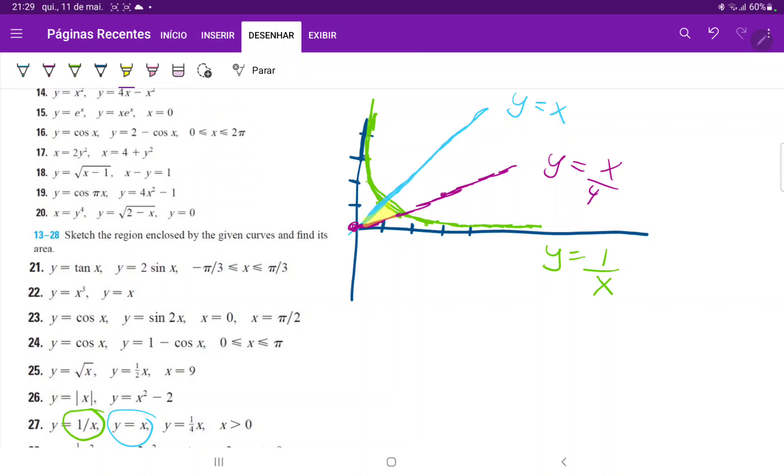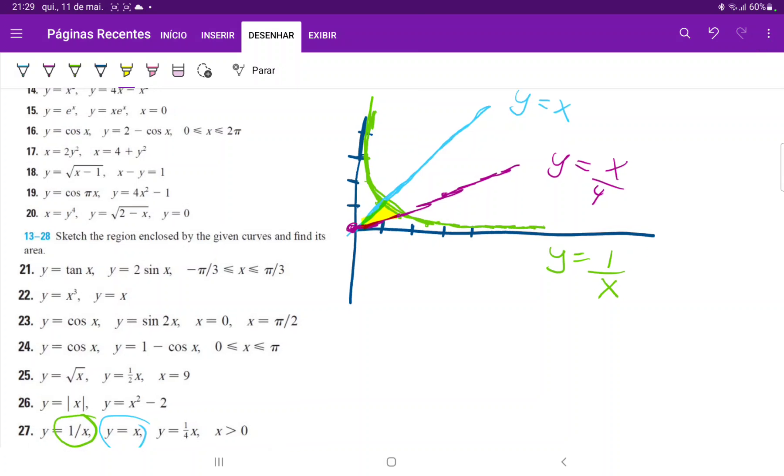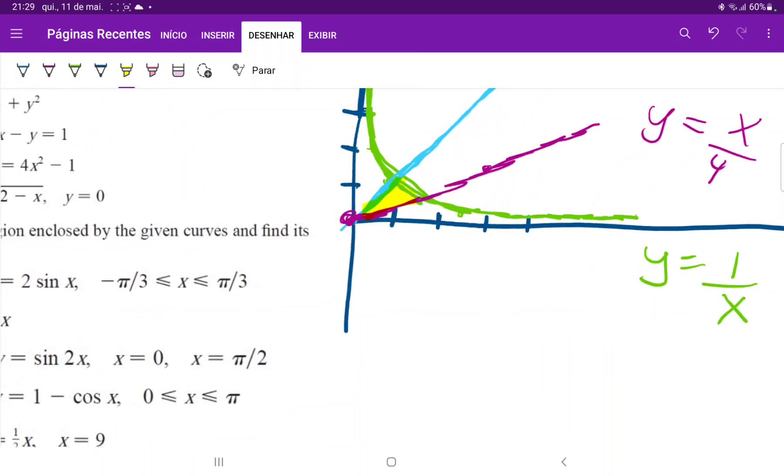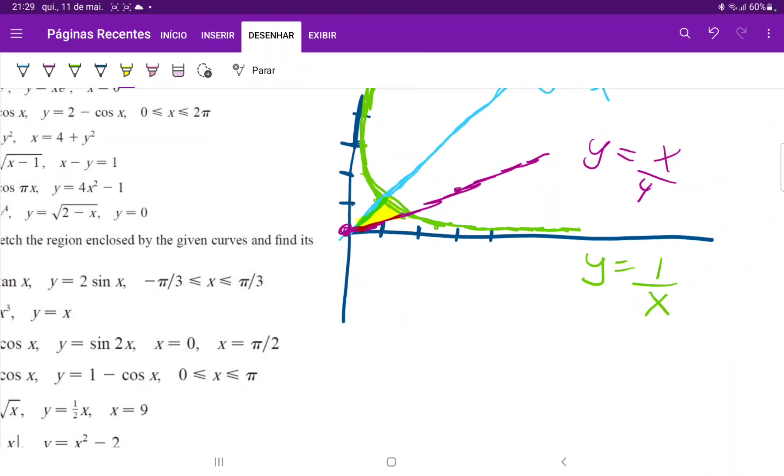This is y equals x over 4. So we can see here that the area between these curves is this little kind of triangular section. Now, this is a difficult problem because we do not consistently have the same upper function. At around here, and maybe I'll draw this dotted line, at around here,